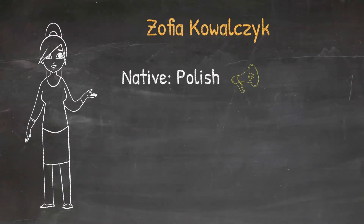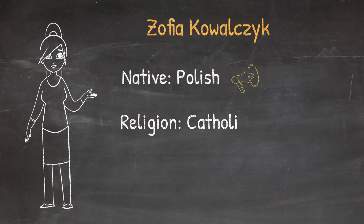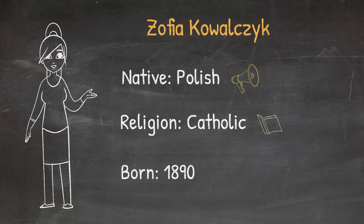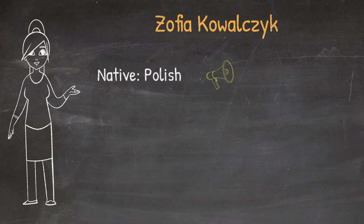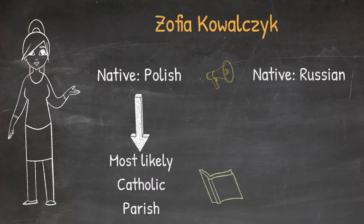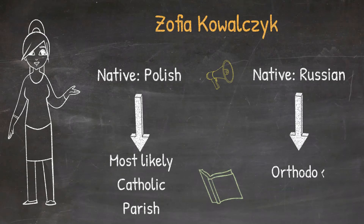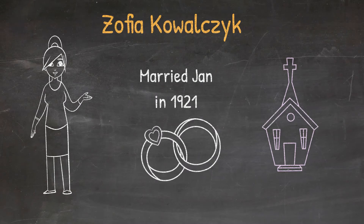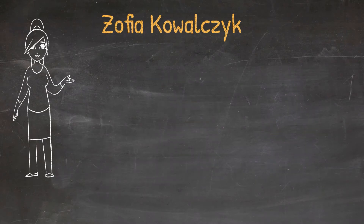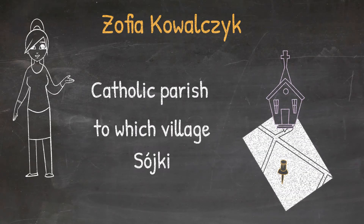Zofia also declared that she spoke Polish, and this information together with her religion will help us narrow down the registration location. Bear in mind this doesn't mean her birth record will be written in Polish — since she was born in 1890 in the Russian partition, her record will be written in Russian. Knowing the declared language spoken is also important when we are not sure what religion she observed. For example, if she had said she spoke Russian only, that would indicate she could have attended the Russian Orthodox Church. But in our case, we know Zofia was Catholic, which means we need to look for a Catholic parish that the village Suiki belonged to in 1890.